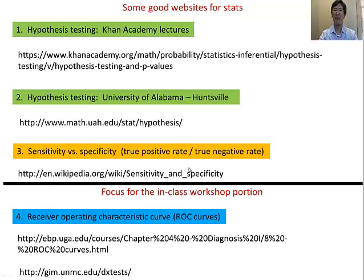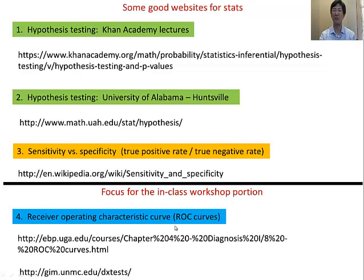To wrap up, I invite you to go on the web and check out the Khan Academy lectures on hypothesis testing — very good, more math than what I just talked about. Once you're comfortable, go to the University of Alabama website for more math and good explanations. Once you're used to confidence intervals, alphas, and betas, check out the Wikipedia page on specificity and sensitivity — a really, really good page. Then you can go forward and check out the in-class lectures on ROC curves. The wiki page on ROC curves is also very good. Thank you for your attention — I'll see you in the real lectures.